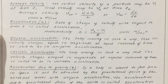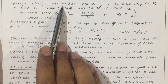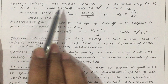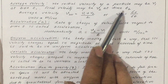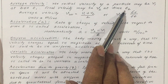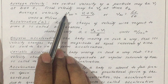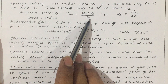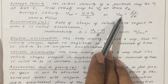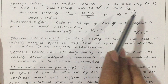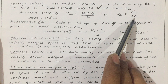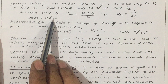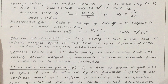What do we mean by average velocity? The initial velocity of a particle may be V1 at time t1, and the final velocity may be V2 at time t2. Therefore, average velocity V_av equals (V1 + V2) / 2, or V_av equals delta S divided by delta t. The unit of velocity or average velocity is meter per second.